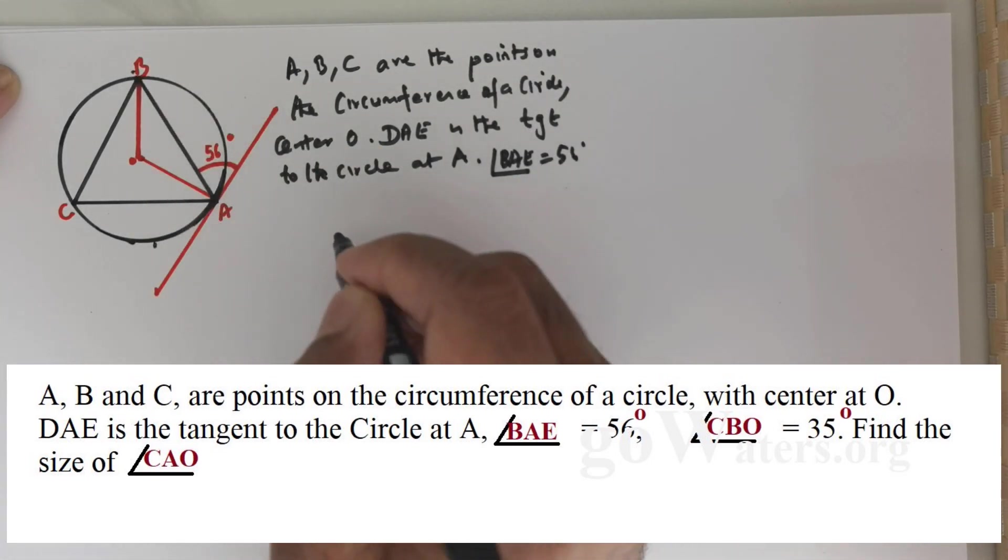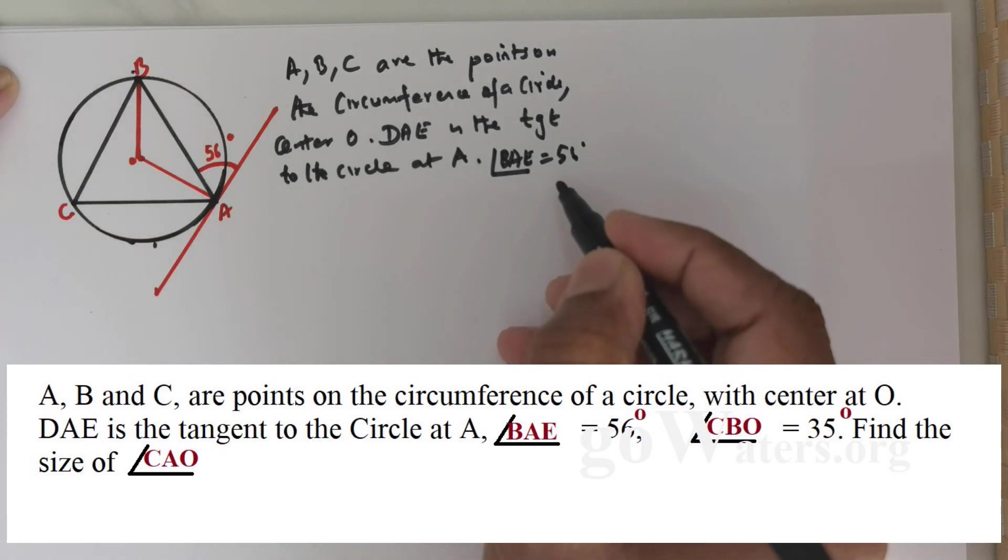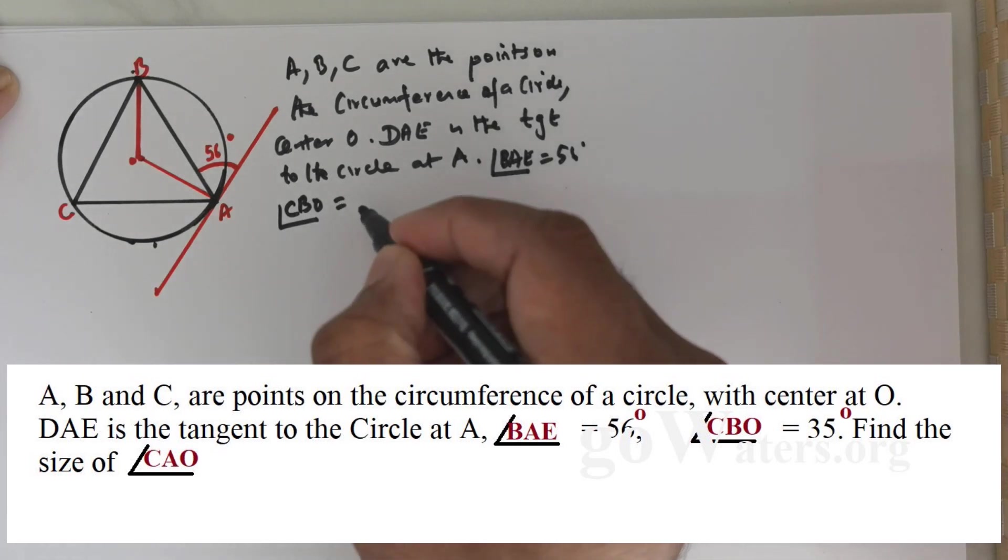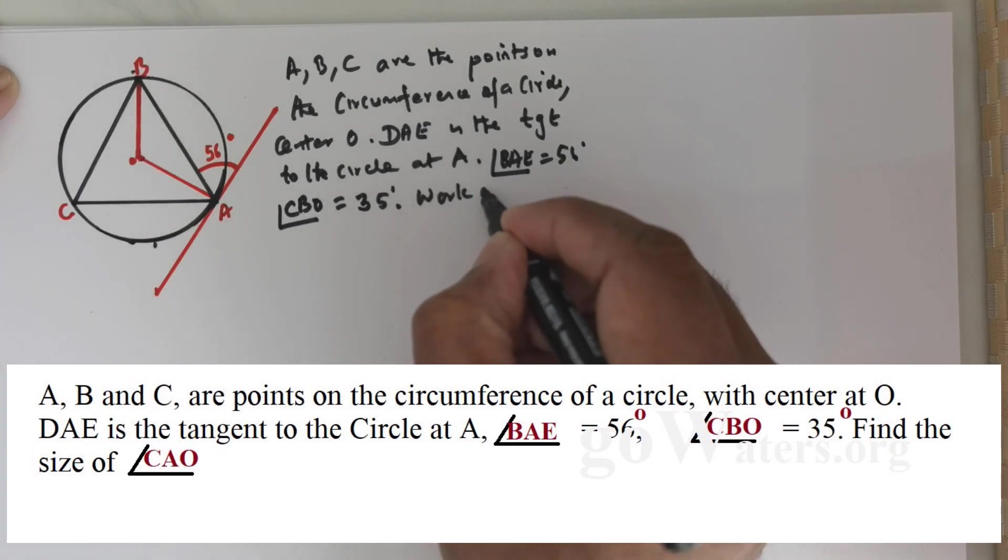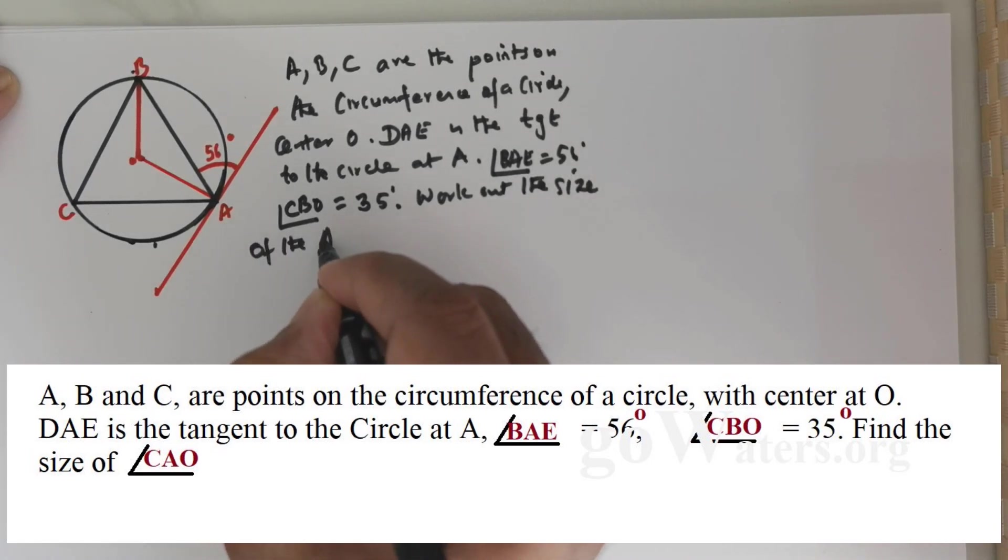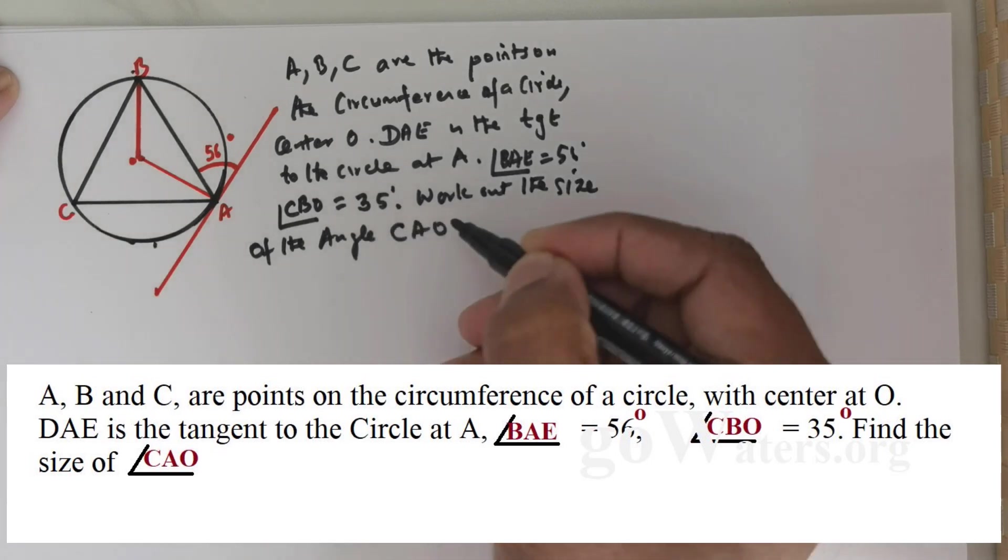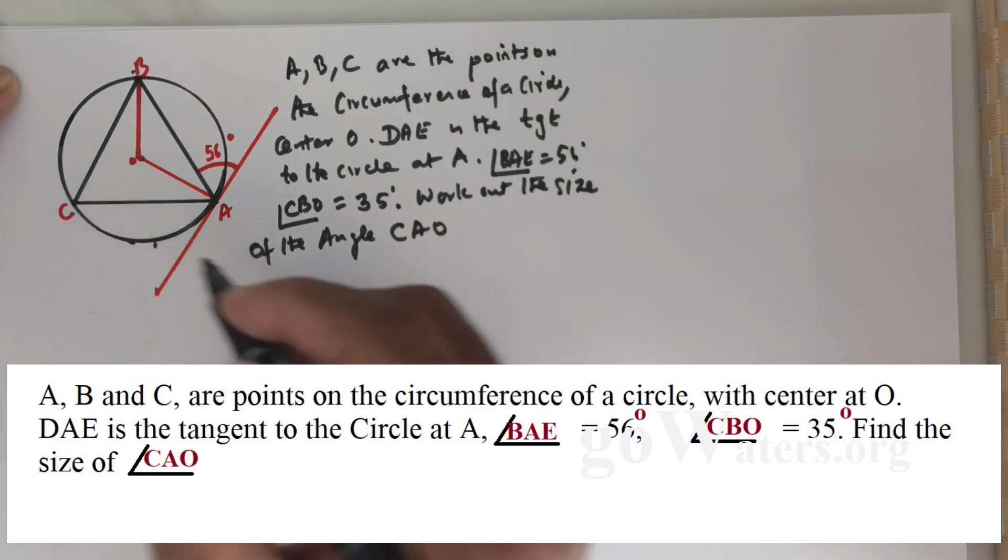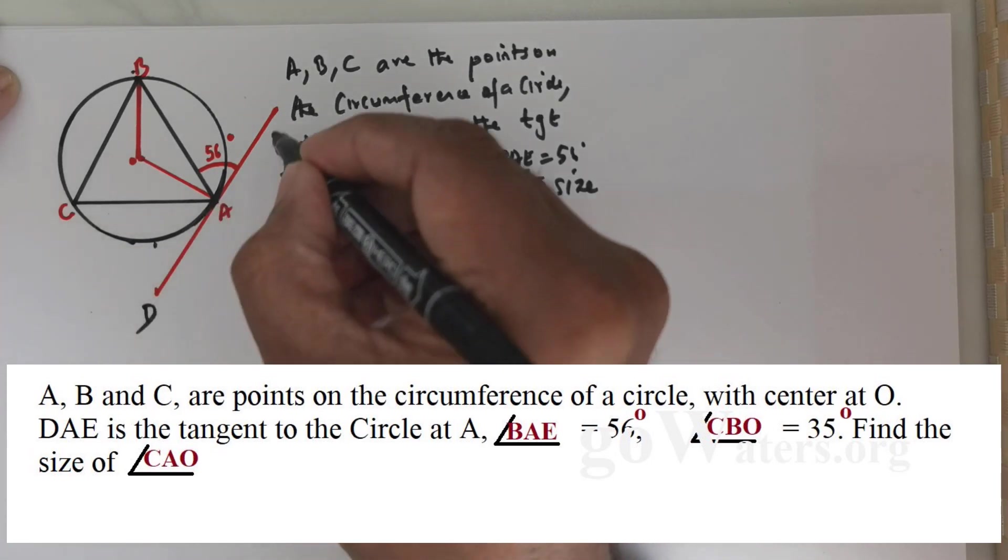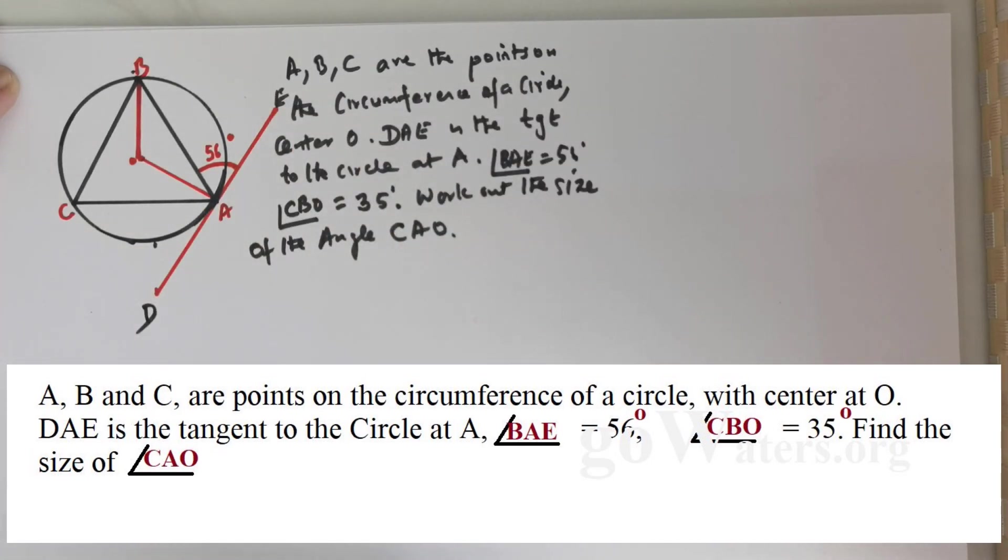Now let me come back to the figure in a minute. Let me write down the question and you got another angle, angle CBO is 35 degrees, and it states work out the size of the angle CAO. So this point is O. Now DAE is a tangent, so let me write that down and then we are expected to find CAO. So this angle is needed.